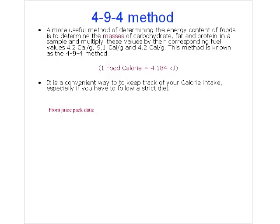Here's another one. For anyone working out a lot and counting calories but not wanting to sit down with a calculator for every single food item, there's a way to estimate energy consumption called the 4-9-4 method. It's based on the idea that on average, we look at the mass of carbohydrates, fat, and protein.